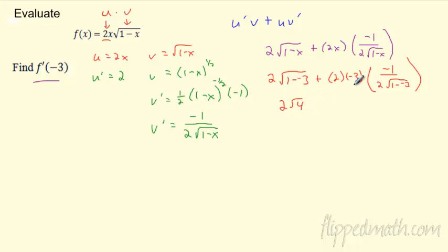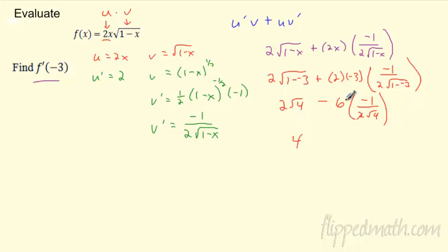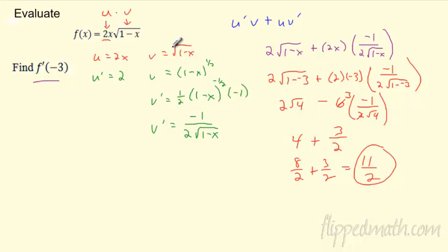So 2 times √4 is just 4. And then 2 times (-3) = -6, times -1/(2√4). √4 = 2, so 2√4 = 4. Those cancel and give you 3. So I've got negative·negative = positive 3 over 2, giving 3/2. Then 4 + 3/2 = 8/2 + 3/2 = 11/2.